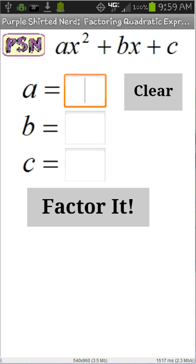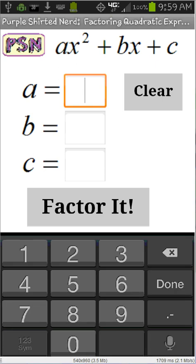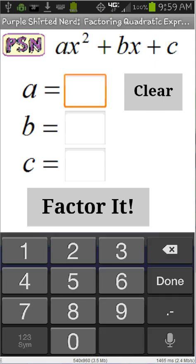We're given a quadratic expression, ax squared plus bx plus c, and we're allowed to choose values for a, b, c. This is intended for you to enter integers. So when I select on a, as you'll see, my number pad comes up.